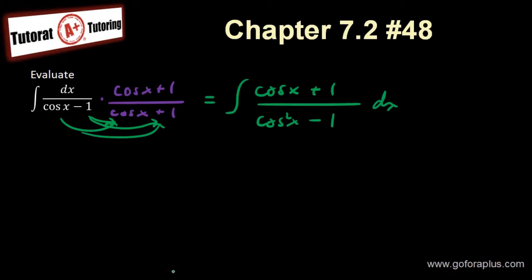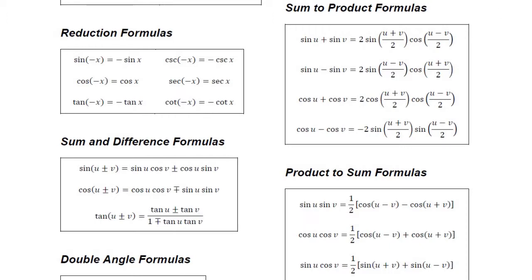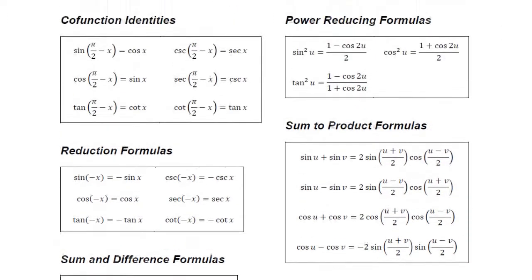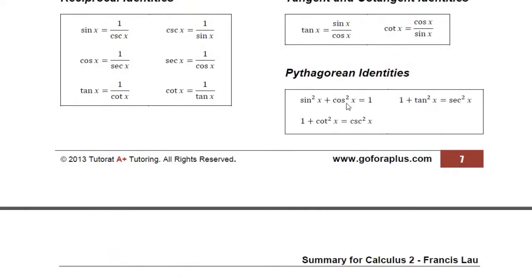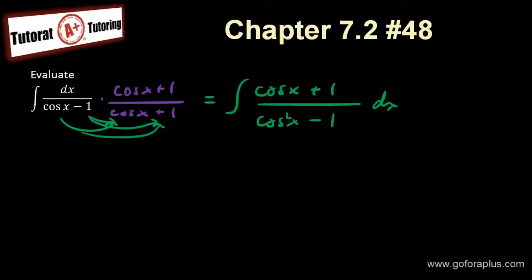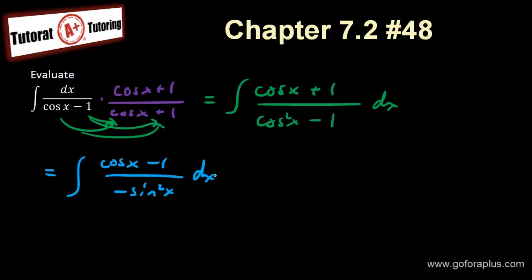Now what is cos²x minus 1? I would say that cos²x minus 1 gives me minus sin²x. So I know this is going to be (cos x minus 1) over (minus sin²x), integral of that dx.